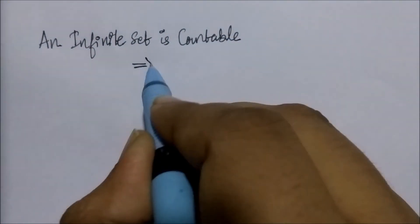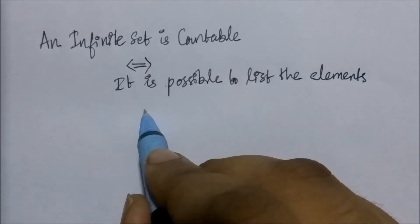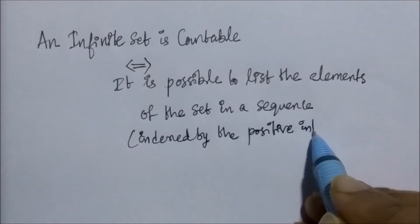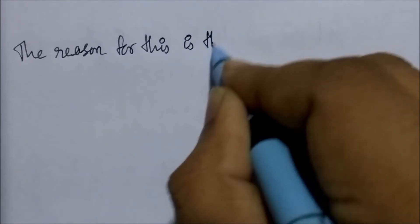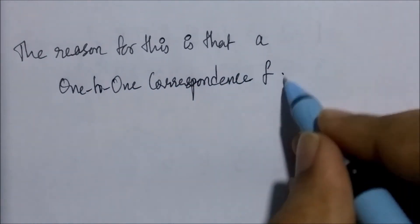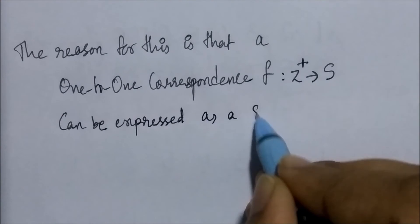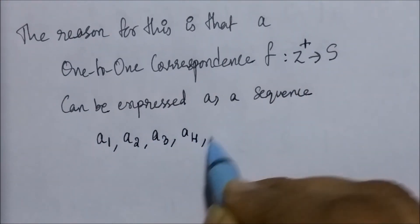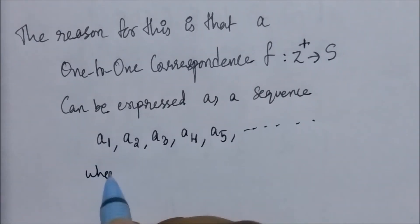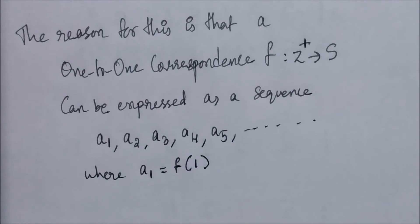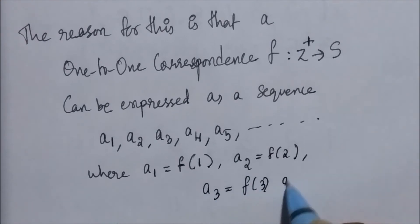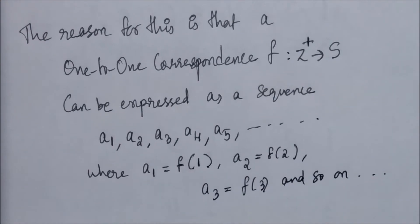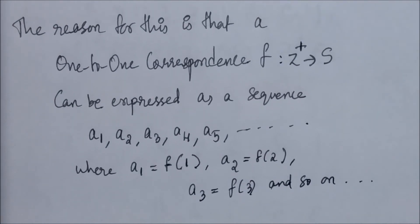An infinite set is countable if and only if it is possible to list the elements of that set in a sequence indexed by the positive integers. If we can list the elements in a sequence indexed by the set of positive integers, we can call that set a countably infinite set. A one-to-one correspondence exists from the positive integers to the set S expressed as a sequence a1, a2, a3, a4, a5, where a1 = f(1), a2 = f(2), a3 = f(3), and so on. If we can express such a sequence, then the infinite set is countable.